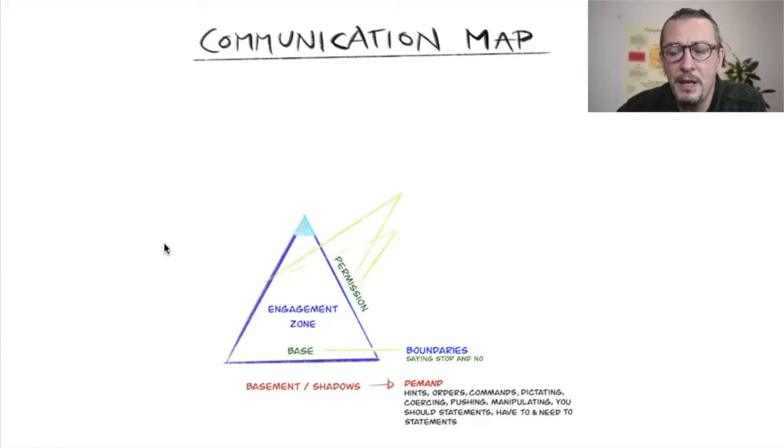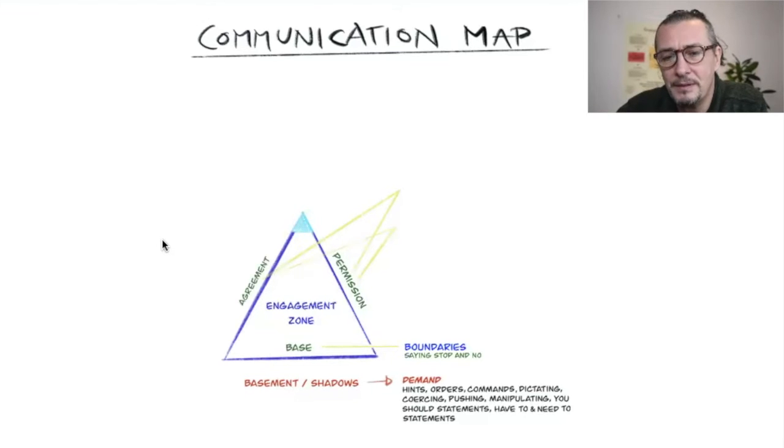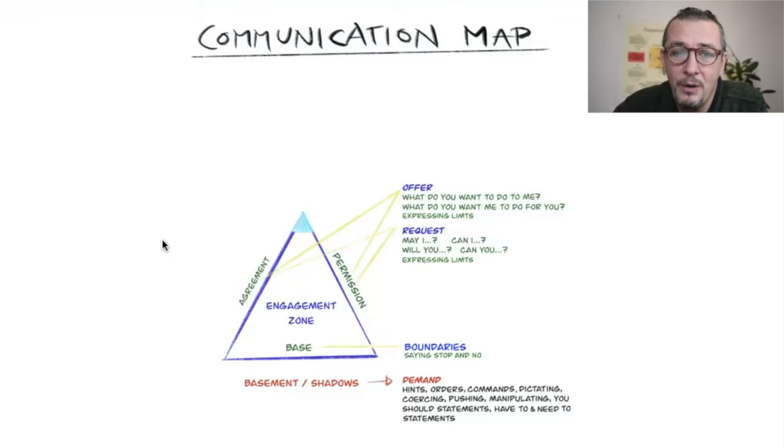So the first thing is when you make the dynamics workable, you know that there is a permission and an agreement dynamic in the engagement zones. That's either you make a request—'May I?' or 'Can I?' or 'Will you?' and 'Can you?'—or if you just want to come from the other place and